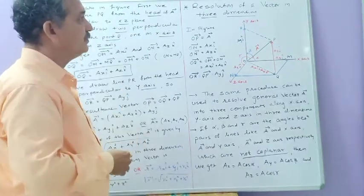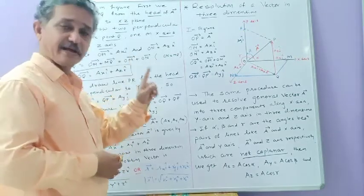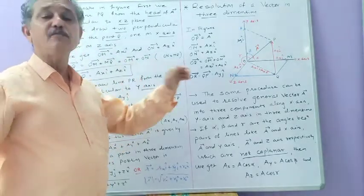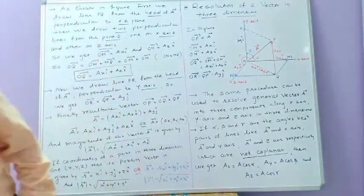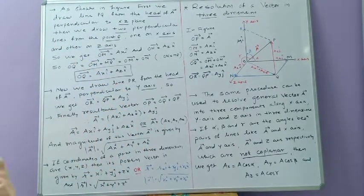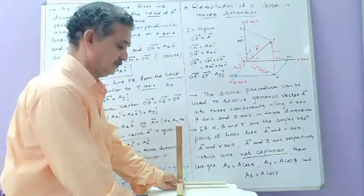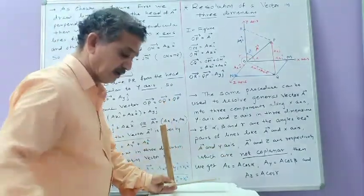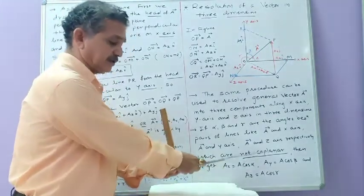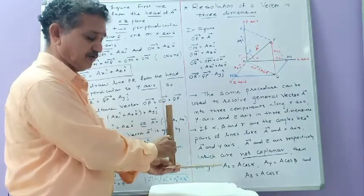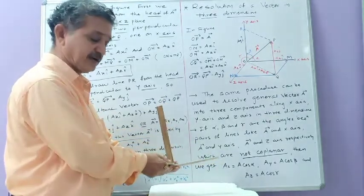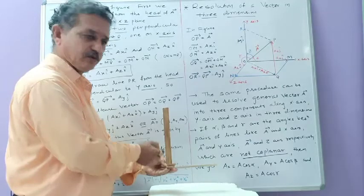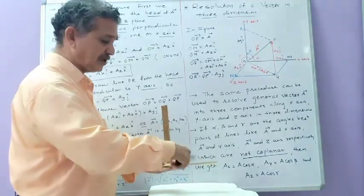But now the vector is in three dimensions — that means the vector is lying in a three-dimensional plane. I will show you a simple instrument to illustrate this. Along one direction is the x-axis, along another direction is the y-axis, and there is a line coming out perpendicular to the plane of the board — that is the z-axis. So this plane is the x-y plane.